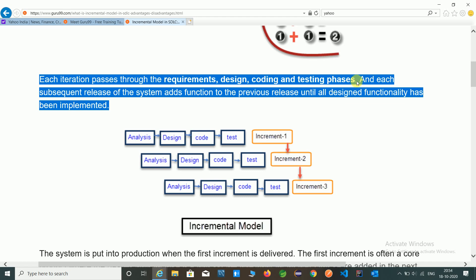So in that model, every phase has a requirement, design, coding and testing phases. And each subsequent release of the system adds function to the previous release until all design functionality has been implemented.